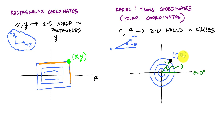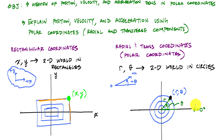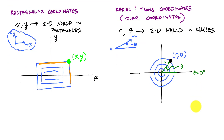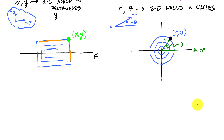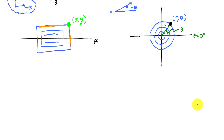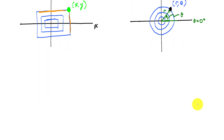In dynamics, we use both coordinate systems to establish location and define position, velocity, and acceleration using a multitude of coordinate systems, usually to simplify our problem and find out more information. With that overview, let's look at position, velocity, and acceleration in terms of polar coordinates.